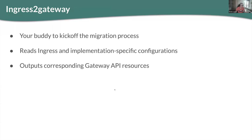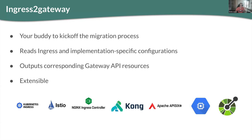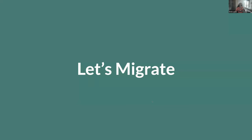Ingress-to-Gateway is a CLI tool that reads all Ingress and implementation-specific configurations — either from file or from a live cluster — and outputs the corresponding Gateway resources. It's also very extensible and provider-based, so every project can implement their own provider. So far we have Istio, Nginx, Kong, API6, Google Cloud, and OpenAPI3 as a special case. I'll hand over to Lior to perform the migration demo.